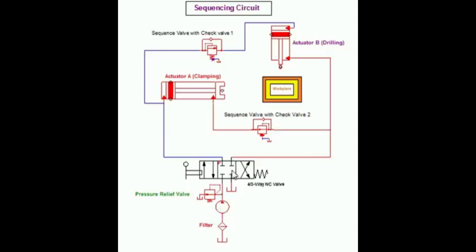The valve must be set high enough so that it opens only after the complete extension of the clamp cylinder. During the retraction of cylinders, the check valve allows the sequencing valve to be bypassed.